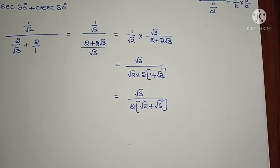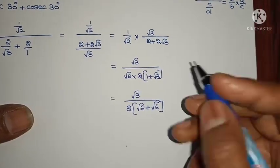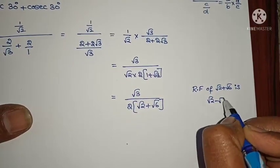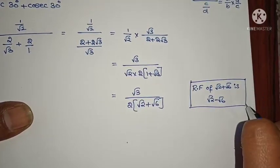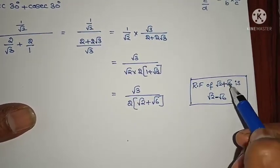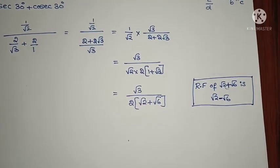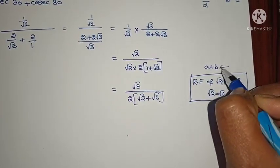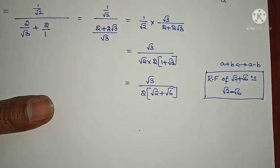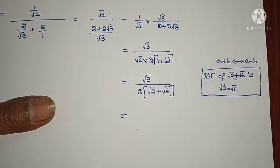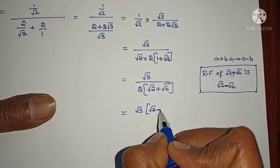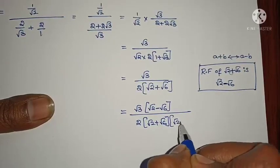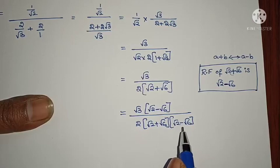Now I am taking the rationalizing factor. We studied rationalizing factor in 9th standard. The RF of (√2 + √6) is (√2 − √6) — if it's plus, you get minus; if it's minus, you get plus. For A + B, RF is A − B; for A − B, RF is A + B. I am multiplying and dividing with √2 − √6.